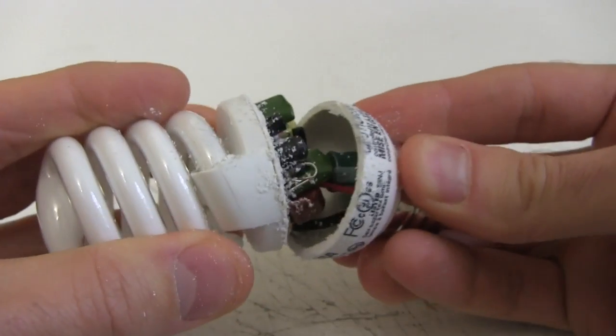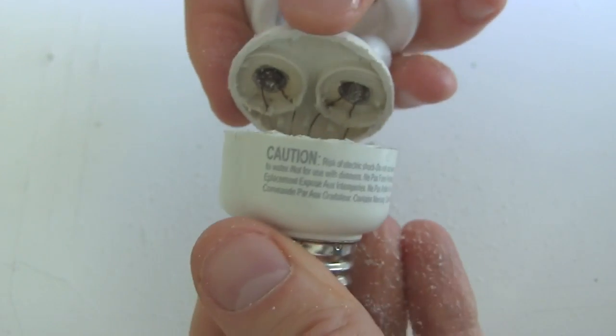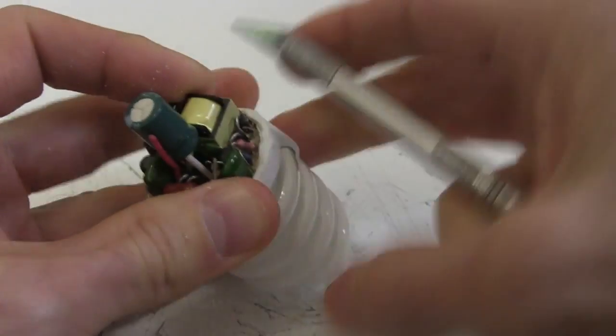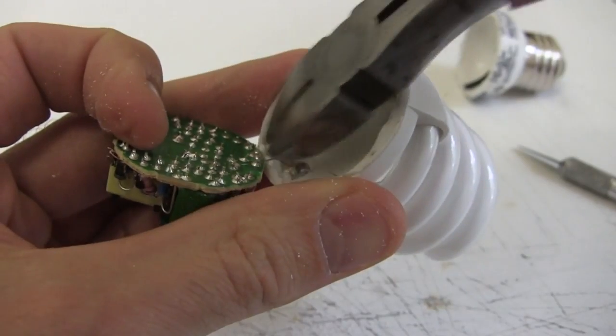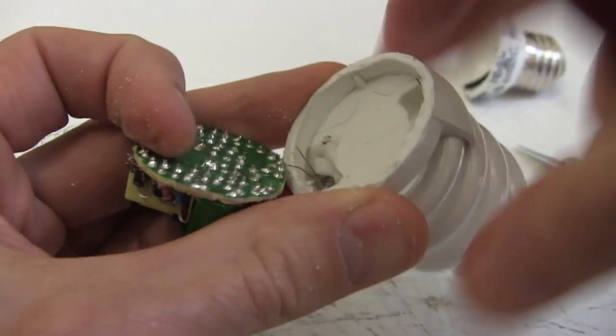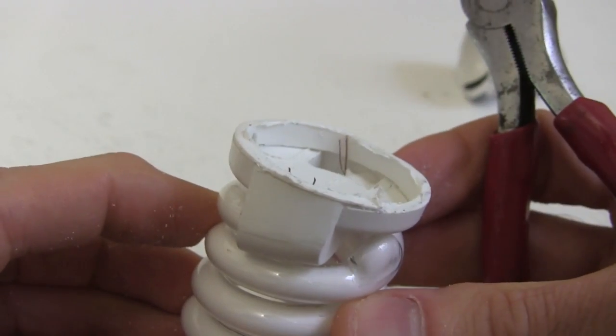You'll either see electronics like this, or just thin wires like this. In either case, cut the wires so that you leave as long a length as possible going to the tube. Keep the part with the tube. Don't worry, the tube is sealed, so no mercury will get out.